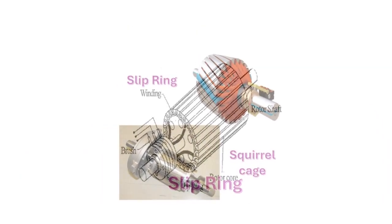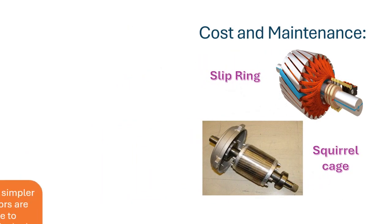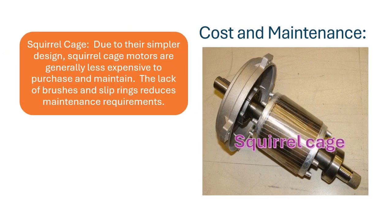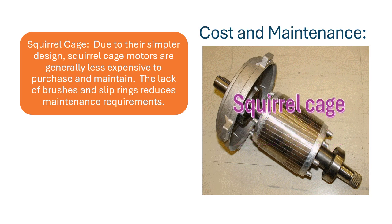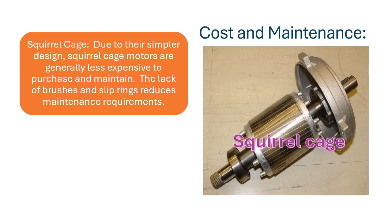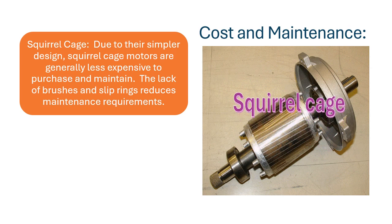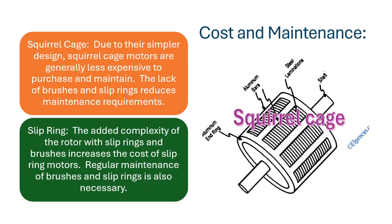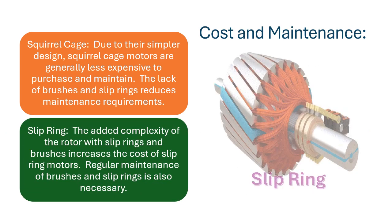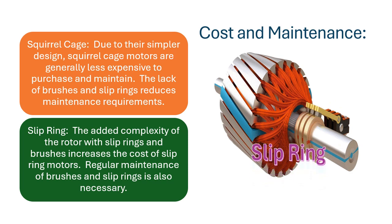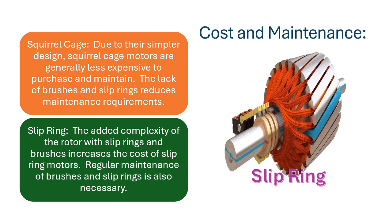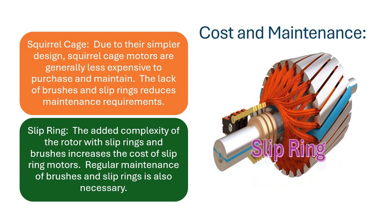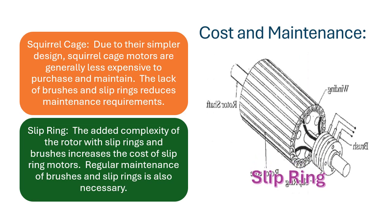Cost and Maintenance — Squirrel Cage: due to their simpler design, squirrel cage motors are generally less expensive to purchase and maintain. The lack of brushes and slip rings reduces maintenance requirements. Slip Ring: the added complexity of the rotor with slip rings and brushes increases the cost of slip ring motors. Regular maintenance of brushes and slip rings is also necessary.